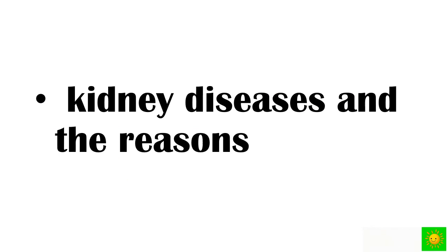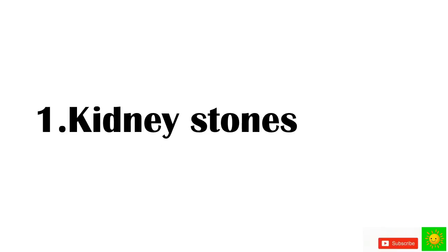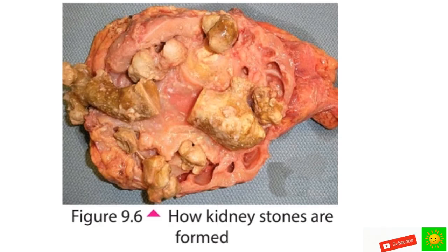If the kidneys are damaged, the process of excretion does not happen the way it should. Some examples of kidney diseases and their reasons are: first, kidney stones — salts such as calcium oxalate deposit in the kidneys and form crystalline structures known as kidney stones.